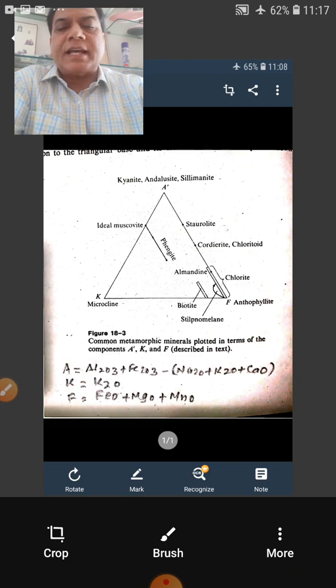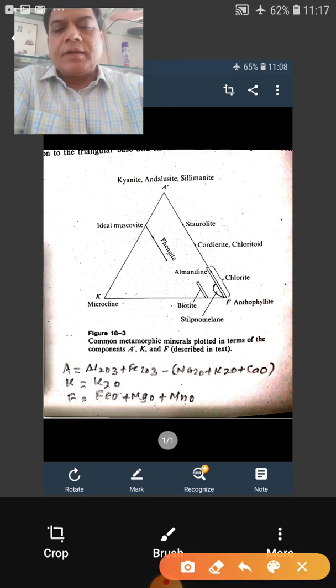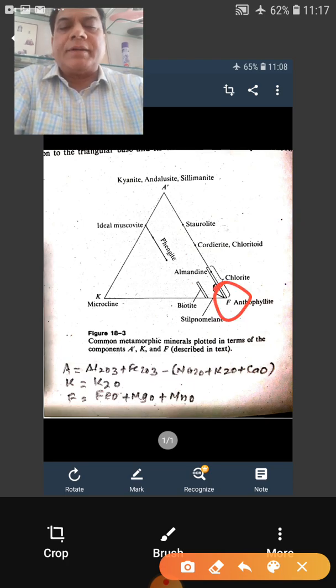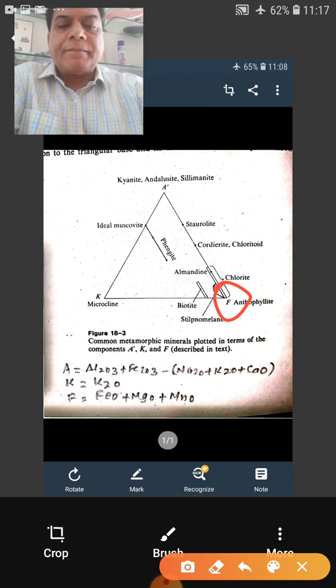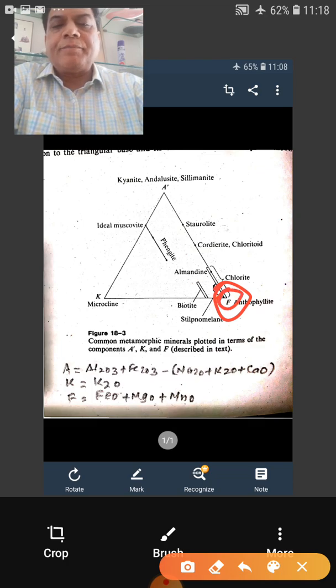And like in ACF diagram on this F side, this is your corner. This side, it is again FeO plus MgO plus MnO. Means minerals like your hypersthene and olivine. The same minerals which you would plot on ACF diagram can be plotted here. So this is slightly in the sense different from your ACF diagram.